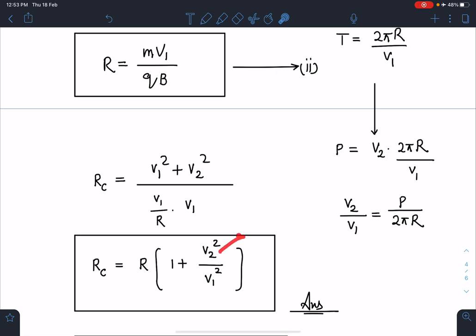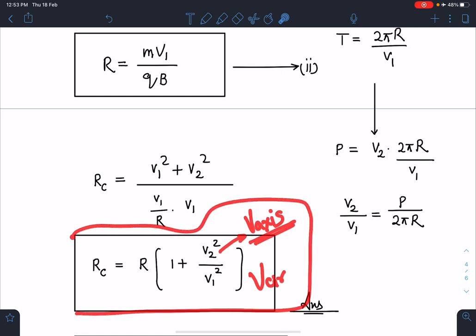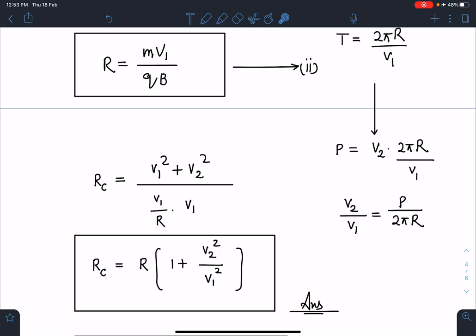So this is very easy to remember: R_c = R[1 + (v_axis/v_circle)²]. This is going to be the radius of curvature of helix. However, we have to find our answer in terms of R and P.